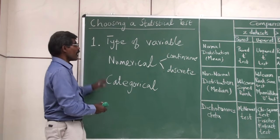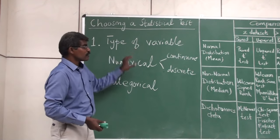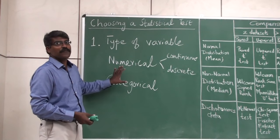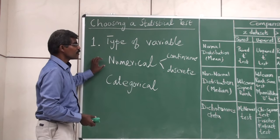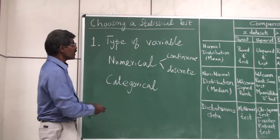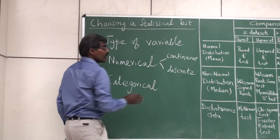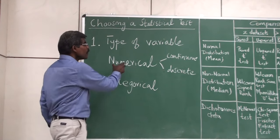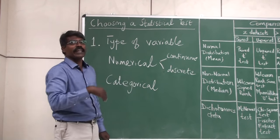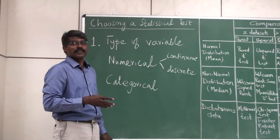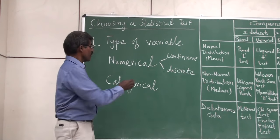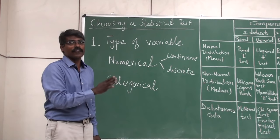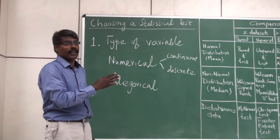So first we need to find out whether our data is numerical continuous, numerical discrete, or categorical. One more point to remember: numerical continuous data is usually summarized as means; numerical discrete data many times does not follow normal distribution and is summarized as medians; and categorical data are usually summarized as proportions.